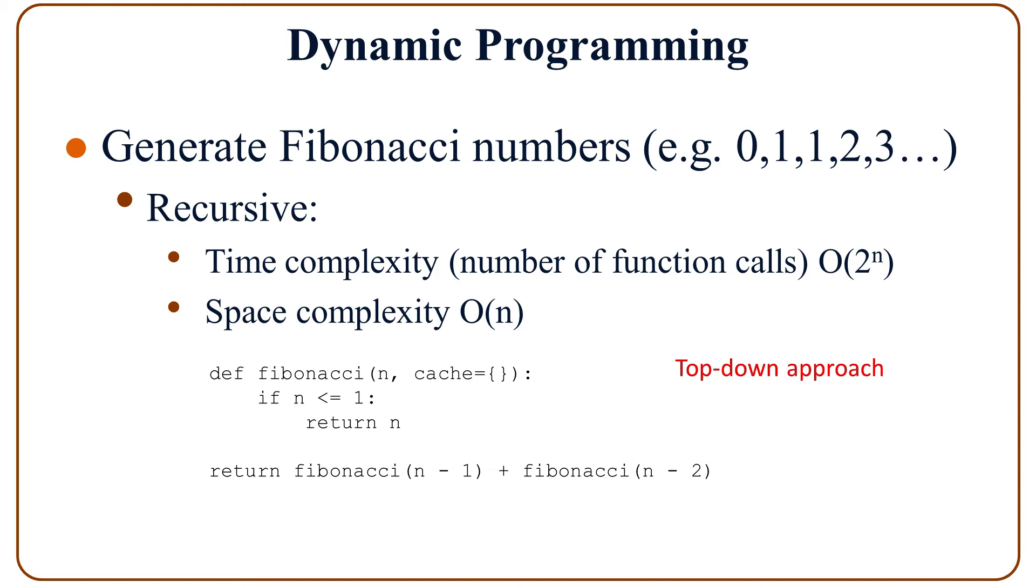Let's look at the code example here. This is following top-down approach. The function takes N and cache. Cache here is a dictionary, and it is automatically initialized with an empty dictionary if nothing is passed to the function.